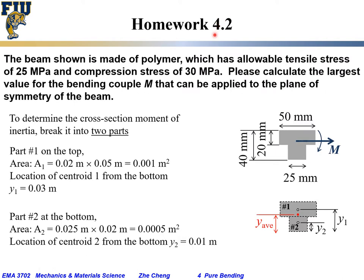Homework 4.2: The beam cross section shown is made of polymer with a T-shaped cross section. It has an allowable tensile stress of 25 MPa and an allowable compressive stress of 30 MPa. We want to calculate the largest bending moment (bending couple) that can be applied in the plane of symmetry at the cross section.